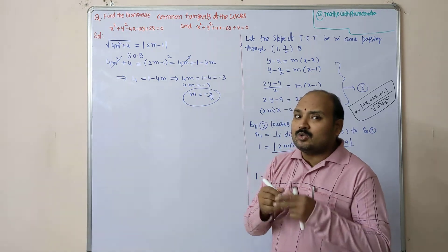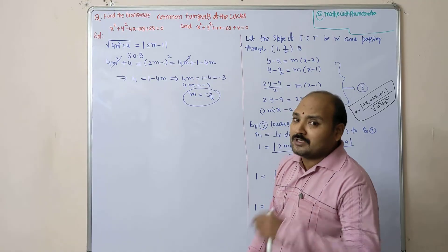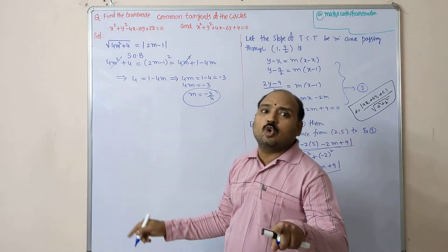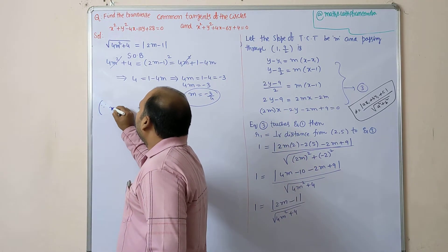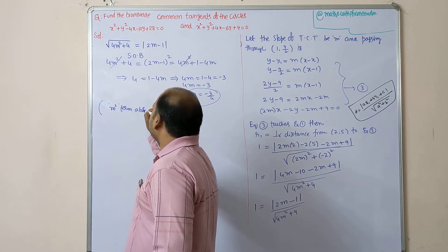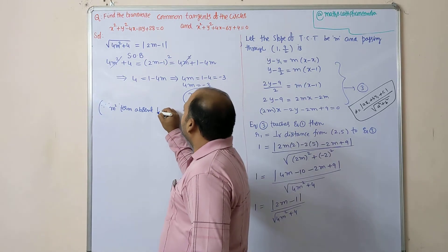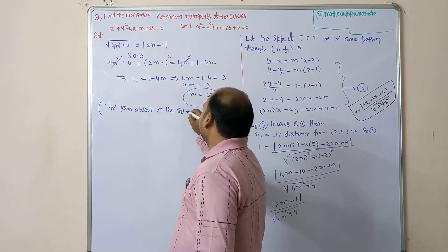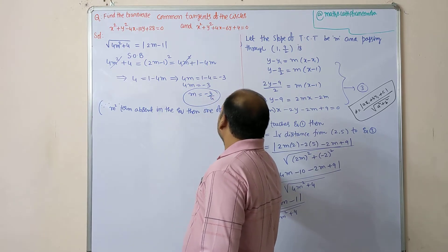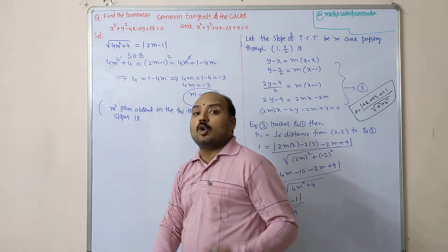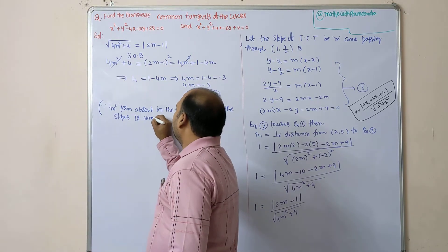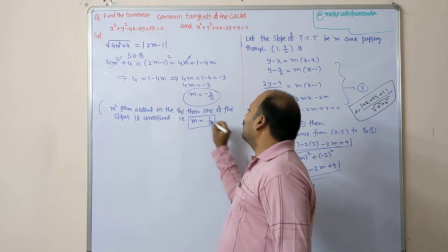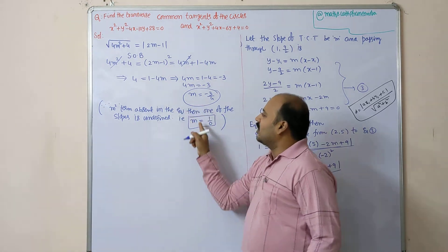From the figure we expect two transverse common tangent equations, but we found only one slope value m = −3/4. Whenever the quadratic m² term is absent in the equation — meaning it was cancelled — one of the slopes is undefined. An undefined slope means m = 1/0. So we have two cases: m = −3/4 and m = 1/0 (undefined).